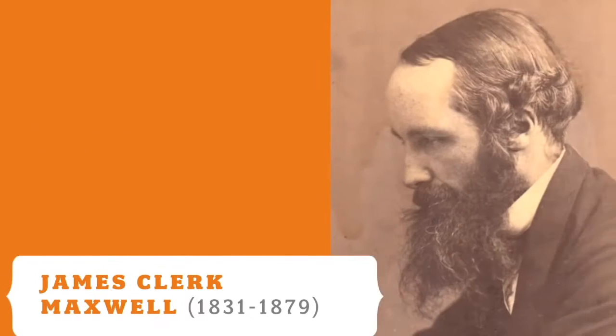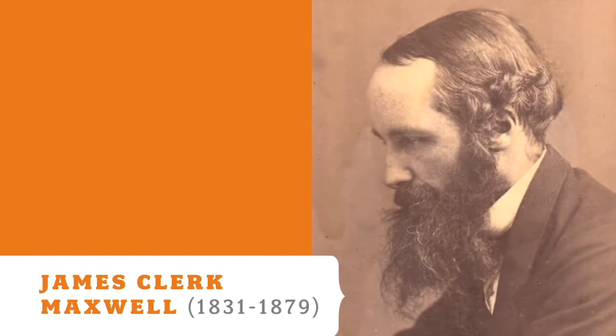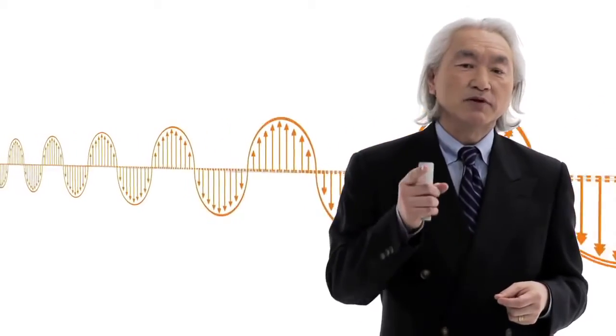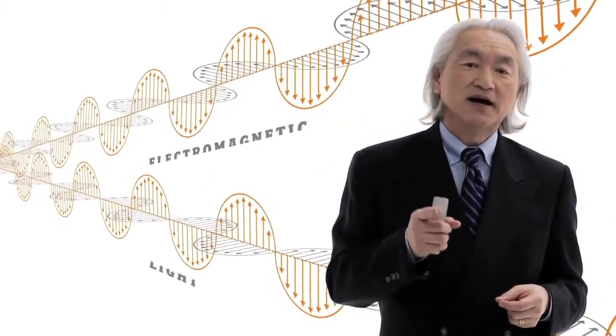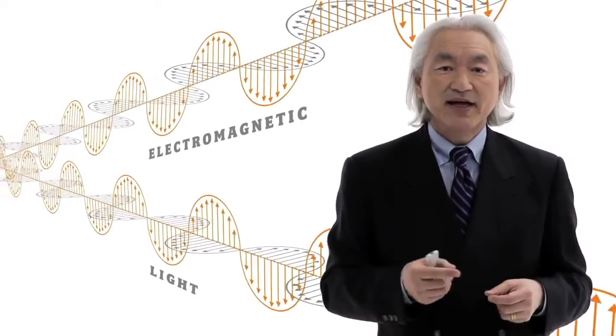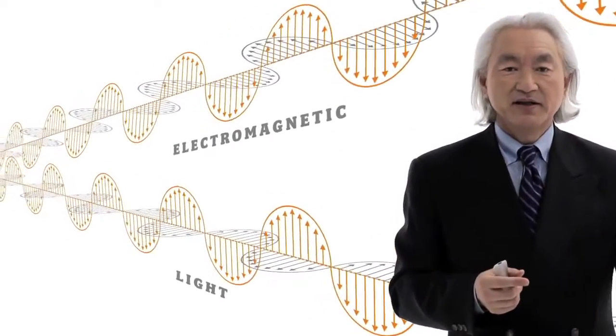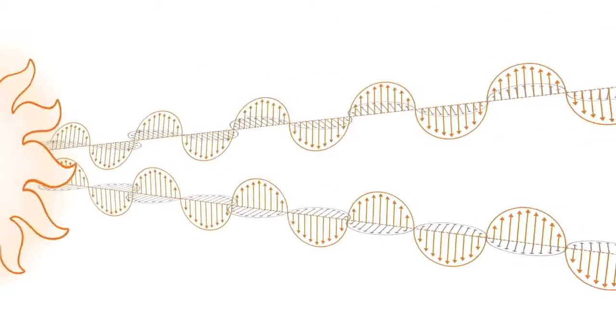Well, around the time of the American Civil War, a mathematical physicist, James Clerk Maxwell, calculated using the work of Faraday the velocity of this wave. In one of the greatest breakthroughs of all time, James Clerk Maxwell calculated the velocity of this wave and found out it was the velocity of light.